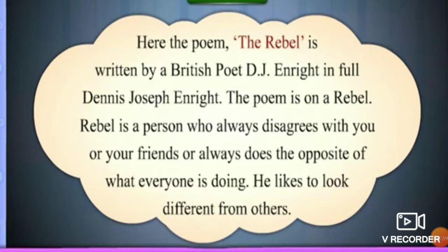So the poem is written by D.J. Enright — that is the short form of his name. The full name is Dennis Joseph Enright. Rebel means a person who does the opposite from all the others — he just gains the attraction of others by doing everything in the opposite manner. So let us move to the poem, children. I will give you a line by line explanation.